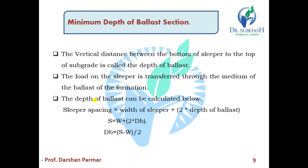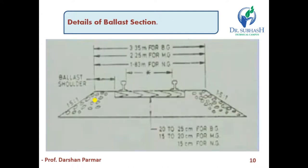Now, minimum depth of ballast. The vertical distance between the bottom of the sleeper and the top of the sub-grade is called the depth of ballast. The load on the sleeper is transferred through the medium of the ballast to the formation. The depth of ballast can be calculated as: sleeper spacing S = W + (2 × depth of ballast), therefore depth of ballast dB = (S − W) / 2.